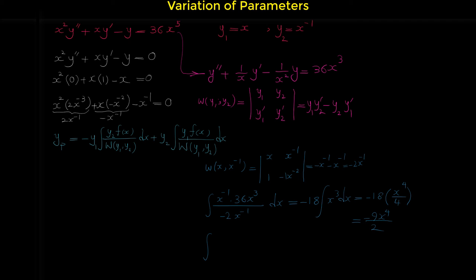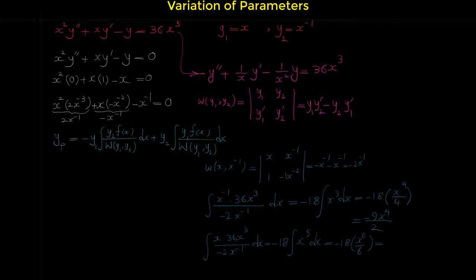Now let's find the second integral: the integral of y1 times f(x) over the Wronskian dx. Y1 is x, and f(x) is 36x cubed. With the Wronskian negative 2x to the negative one, bringing x to the negative one to the numerator gives x to the first in the numerator. So x times x cubed times x equals x to the fifth. Factoring out negative 18, we have negative 18 times the integral of x to the fifth dx, which equals negative 18 times x to the sixth over 6, giving negative 3x to the sixth.